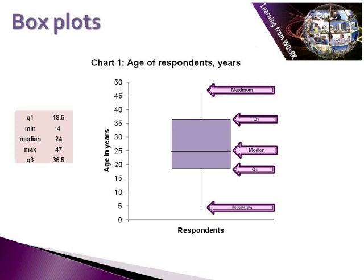We have a minimum age of four years and a maximum age of 47 years, so we plot both our minimum and our maximum. The interquartile range is from 18.5 to 36.5 — that is our Q1 value of 18.5 and our Q3 value of 36.5. Our median value is 24, which is the middle value when all data is placed in order.